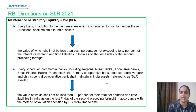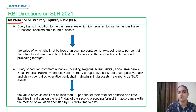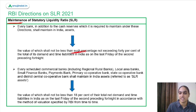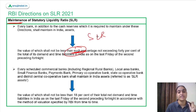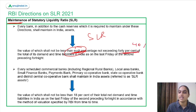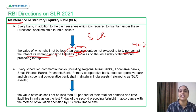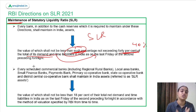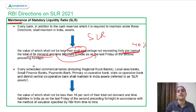Now coming to directions related to SLR. Every bank, in addition to CRR, is required to maintain assets whose value shall not be less than the percentage specified by RBI. The SLR must not exceed 40% of NDTL, and NDTL is calculated the same way — using the last Friday of the second preceding fortnight. As of now, RBI has specified SLR at not less than 18% of NDTL.